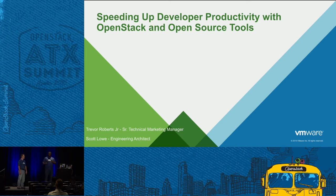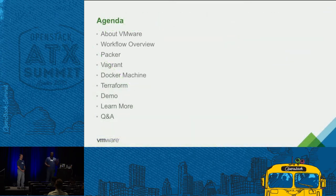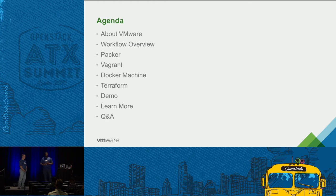Scott and I came up with this talk because we saw that the community has concerns about wanting to reach out to developers and get them accustomed to using OpenStack clouds with the tools they already know and love. HashiCorp has a great following in the software development community, and Docker obviously does too. So we decided to combine these topics and talk about them at the summit. Today we'll cover Packer for image building, Vagrant and Docker Machine for software development, stand up and testing, and Terraform for production-grade deployments.